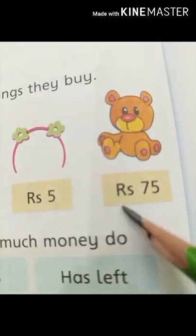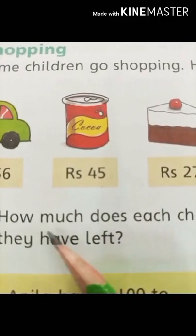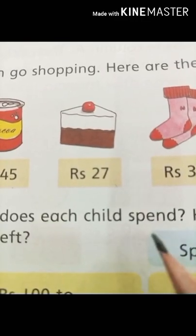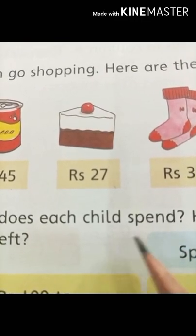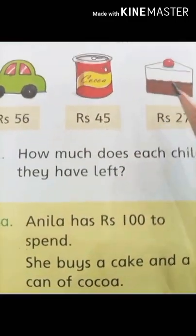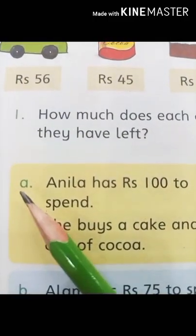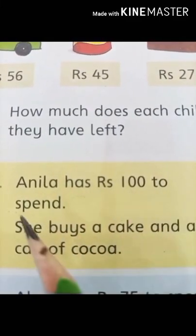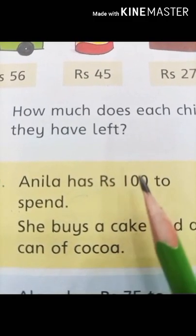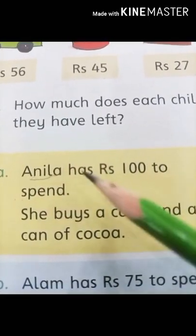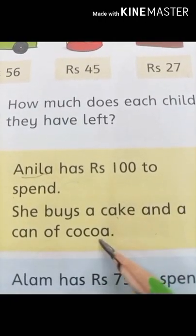Now, what we are going to do is find out how much each child spends. We will find out what things each child is buying, what are the prices of those things, how much money they have, and what amount of money will be left after buying the things. In part A, Anila has 100 rupees to spend. She buys a cake and a can of cocoa.